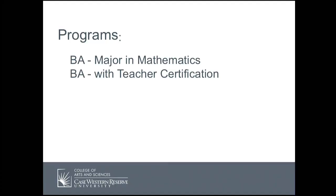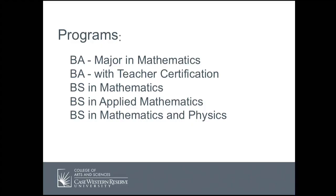We actually have five different degrees that we offer. The first is a Bachelor of Arts with a major in mathematics — our most versatile degree, allowing the most different options, second majors, triple majors. It's really good for a student that might want to go into medicine or law. Then we have a Bachelor of Arts degree with teacher certification for those interested in becoming a certified high school teacher. Then we have a Bachelor of Science in mathematics, a Bachelor of Science in applied mathematics for those interested in applied areas, and finally a Bachelor of Science in mathematics and physics, a joint degree between the mathematics and physics departments.